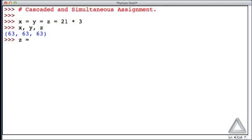Instead of using that cascaded assignment, we could have written, for example, z is equal to 21 times 3, and then y is equal to z, and then x is equal to y. That's effectively breaking that cascaded assignment into three separate statements. So cascaded assignment is fairly straightforward.